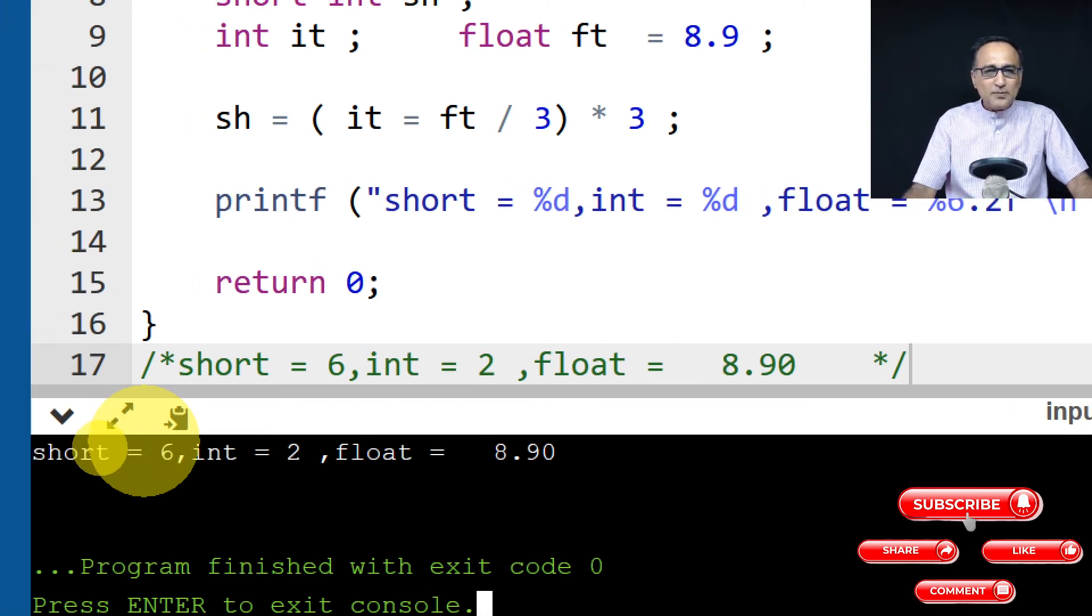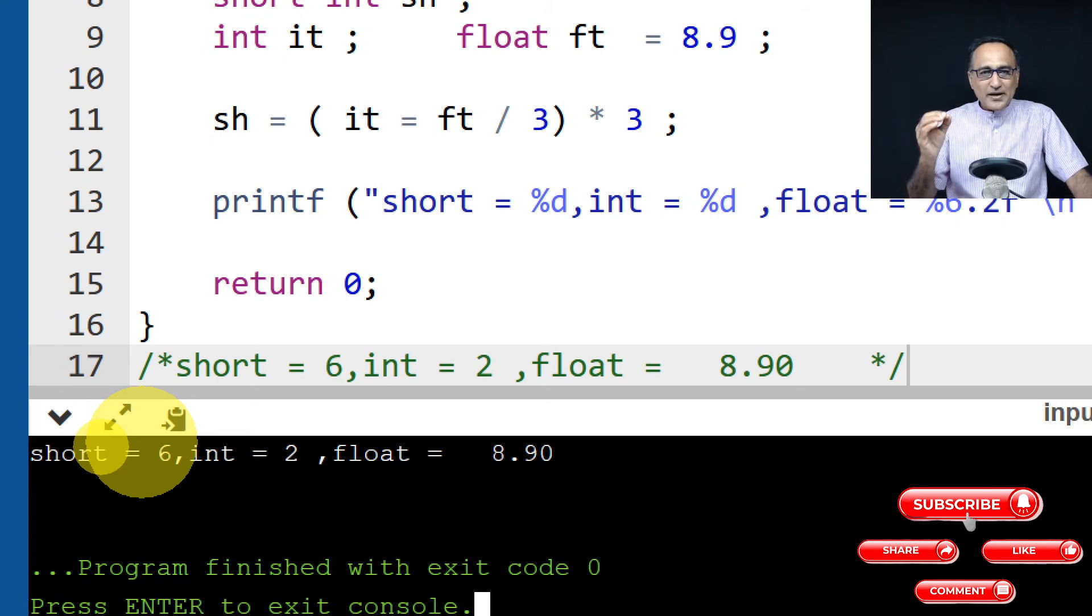Int has become 2 because as I told you, 8.9 divided by 3 was 2.6. So int only took the real part, it did not take the fractional part. It only took 2. So int became 2, then 2 got multiplied with 3. Therefore short happened to be 6.